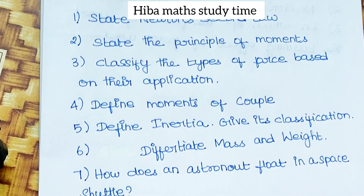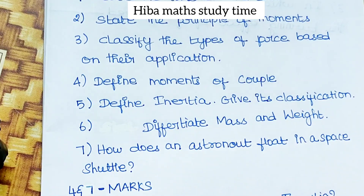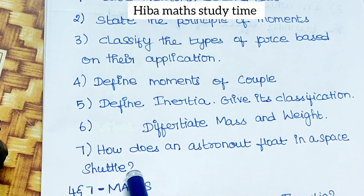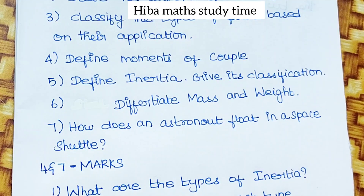Sixth question — differentiate mass and weight. Seventh question — how does an astronaut float in a space shuttle? Total is 7 questions, 2 marks each.